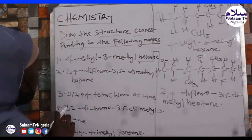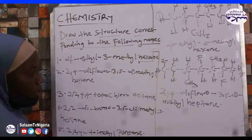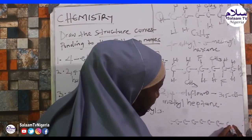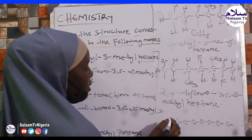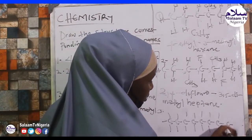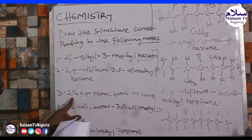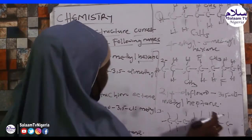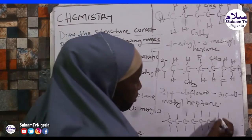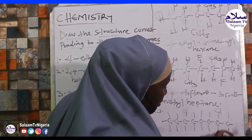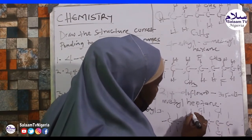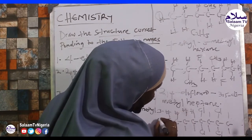Point number 3: 2,2,4,4-tetrachlorooctane. Octane has 8 carbons: 1, 2, 3, 4, 5, 6, 7, 8. Tetra means 4. At position 2 we have 2 chlorine atoms, and at position 4 we have 2 chlorine atoms — giving us 4 chlorines total.